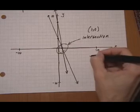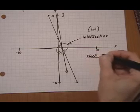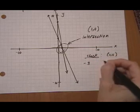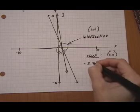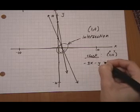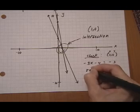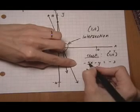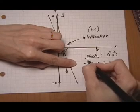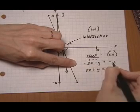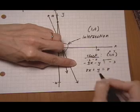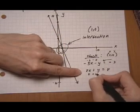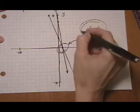And all that remains is to do the check. So we want to find out if we put 1, 0 for x and y into both equations we get true statements. So in the first equation minus 3 times 1 would be minus 3. Take away 0. Does it equal minus 3? Yes. Next equation. 8 times 1 is 8. Plus 0. Does it equal 8? Yes. There we go.